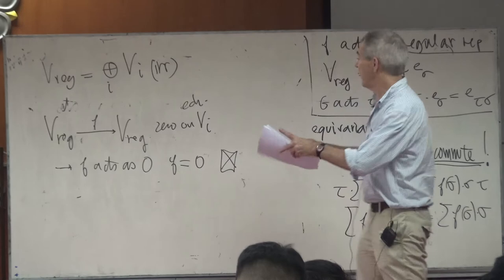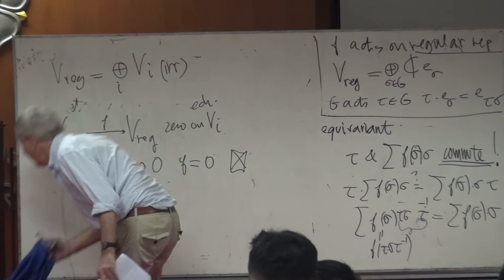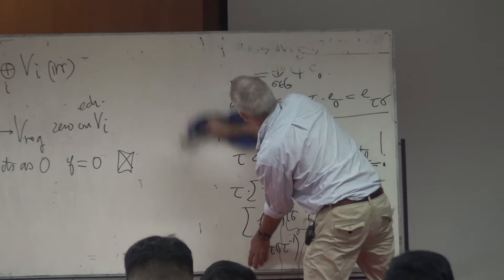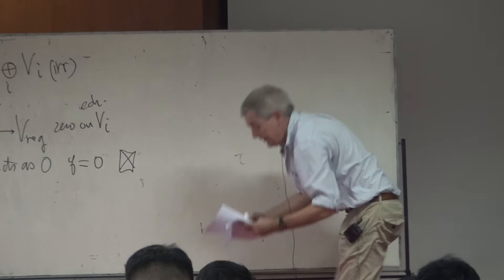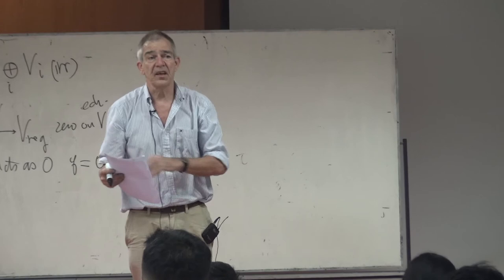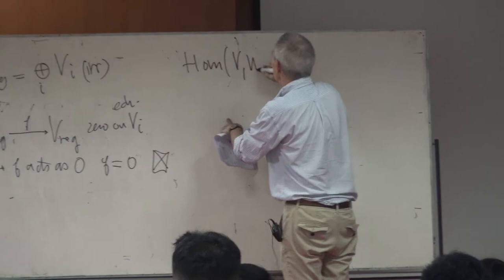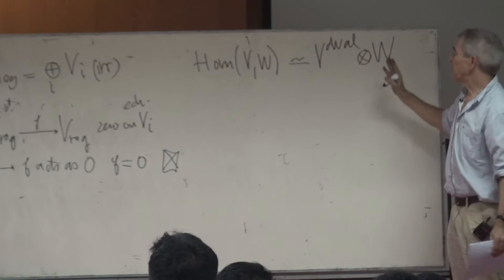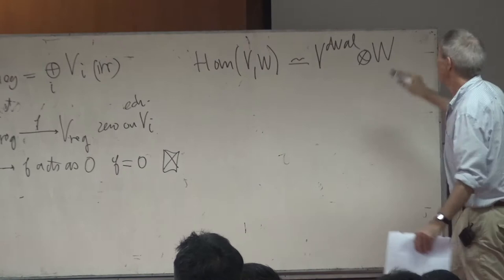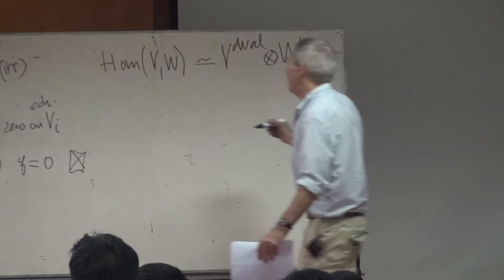Let me explain how to compute the formula for the character of the homomorphism representation. If you know about tensor products and dual representations, you just observe that Hom(V,W) is canonically isomorphic to V-dual tensor W. On the dual you get the complex conjugate, giving exactly the formula. However, if you don't know this, there is also a direct computation. It is not very elegant — maybe you will really want to learn about tensor products after seeing it — but it can be done directly.